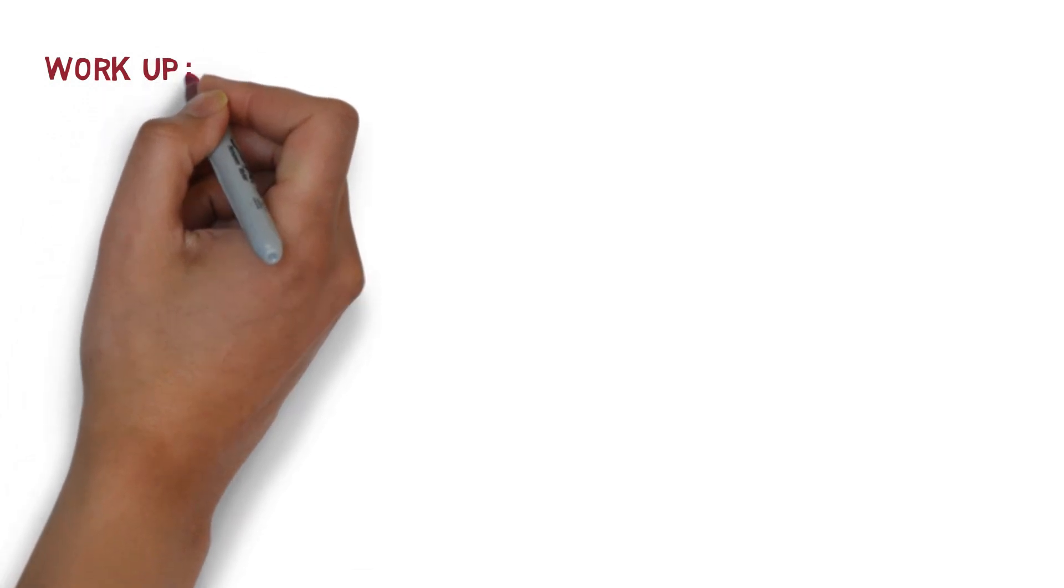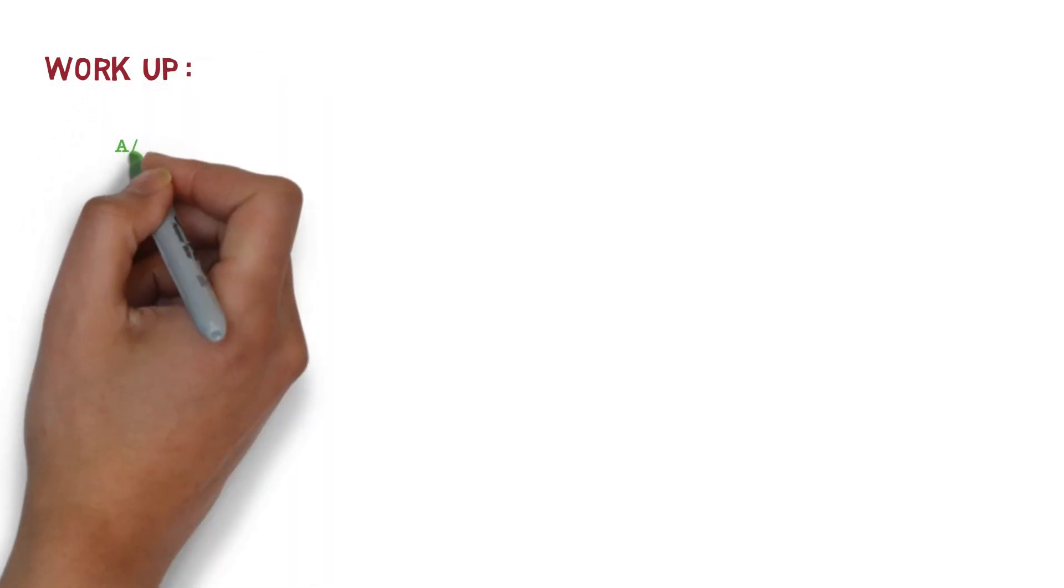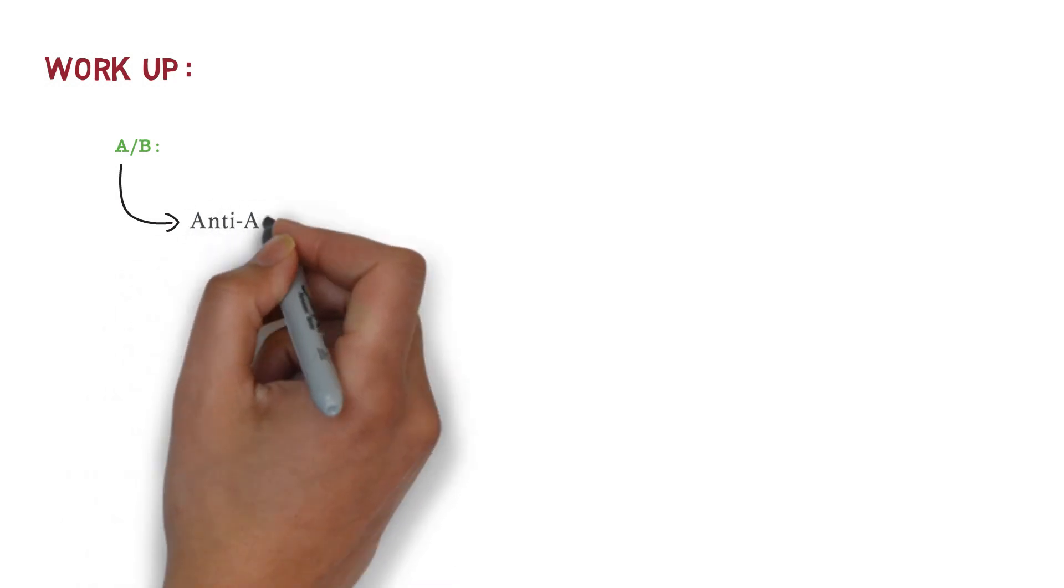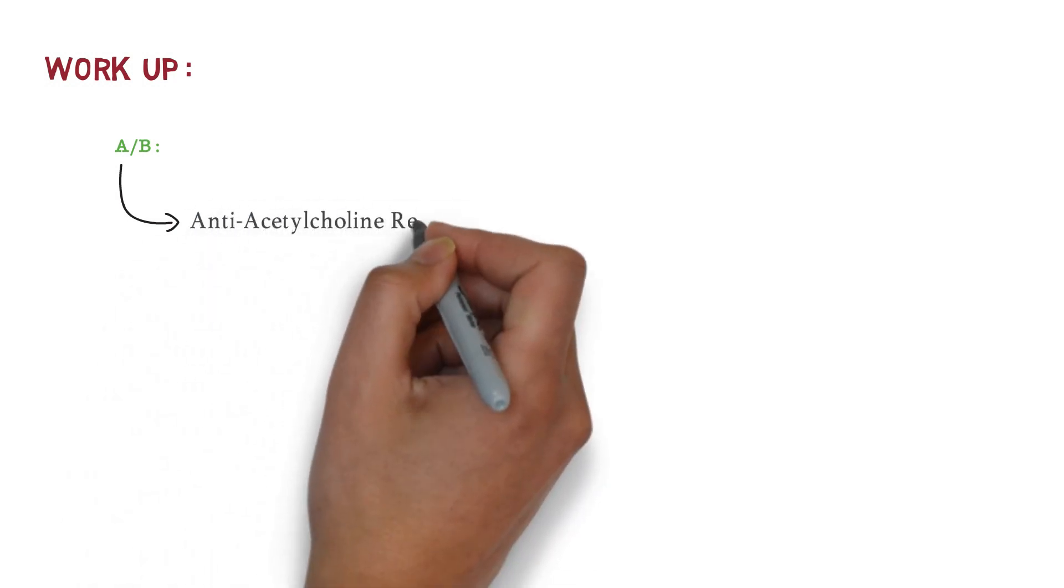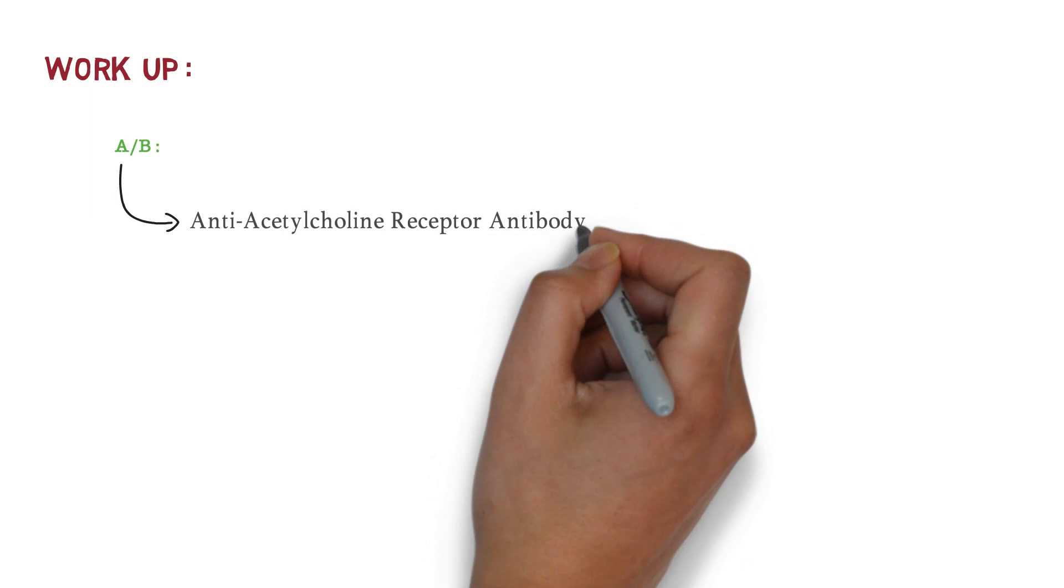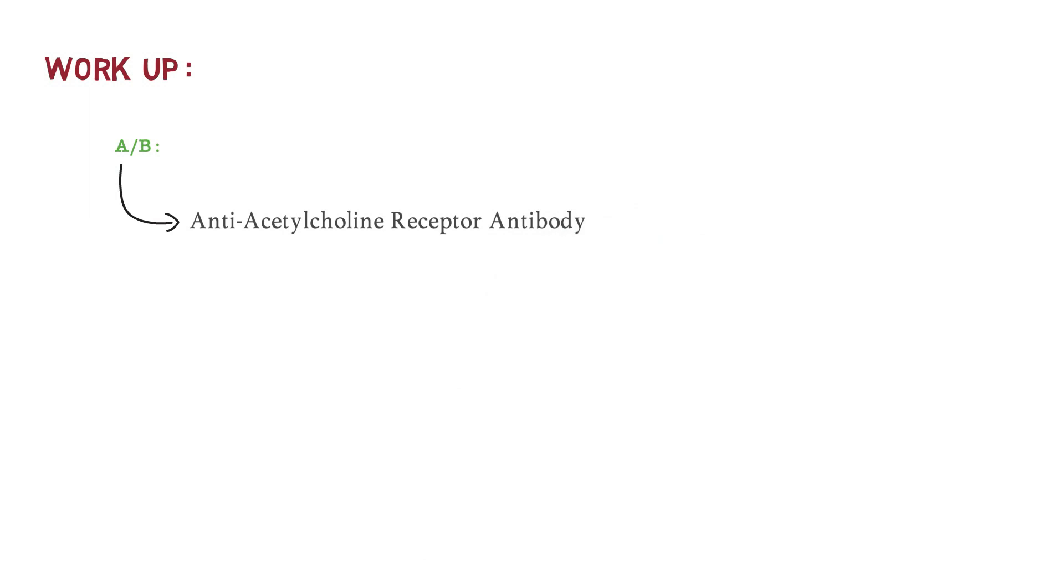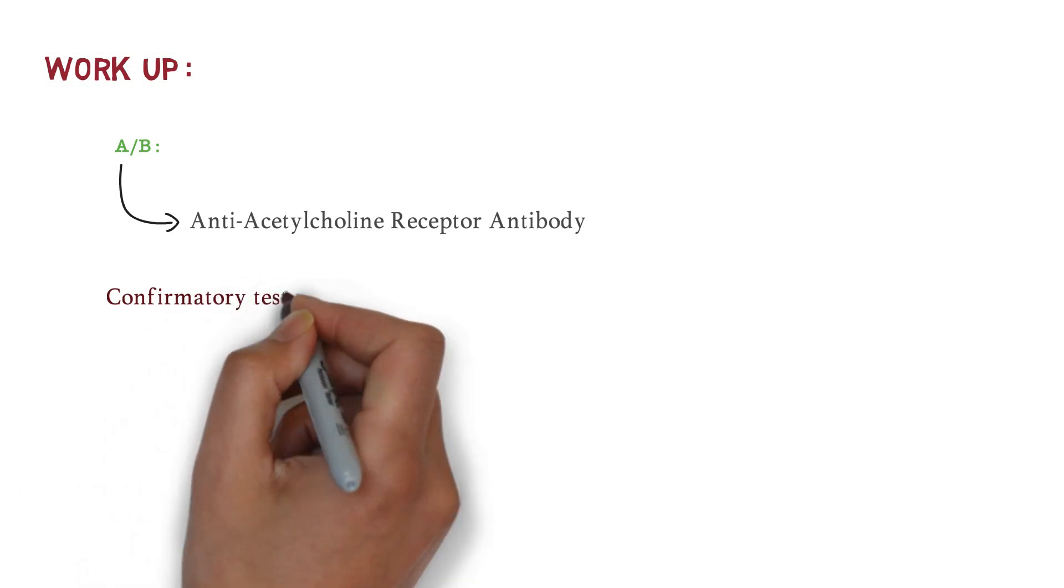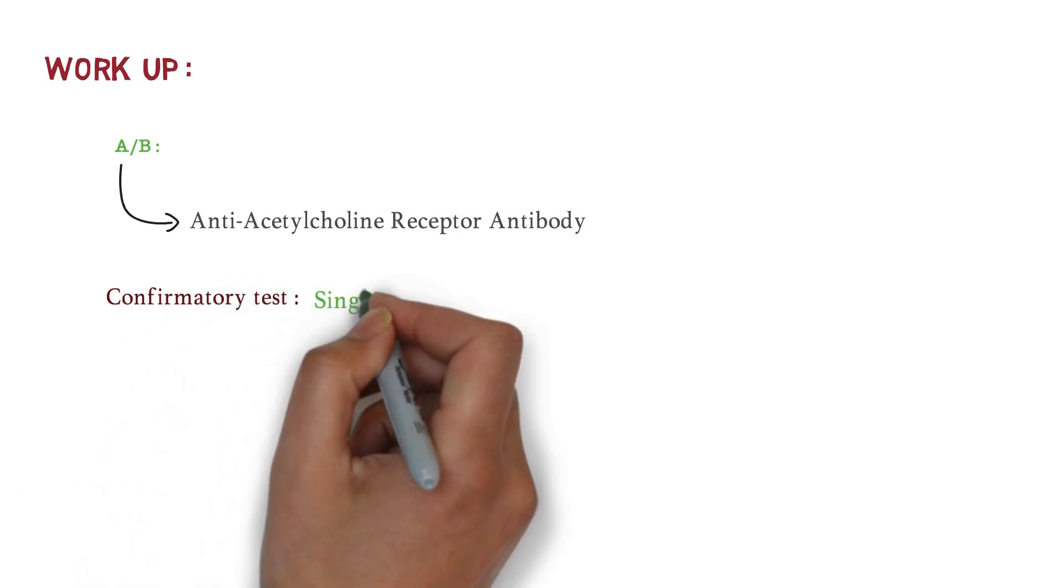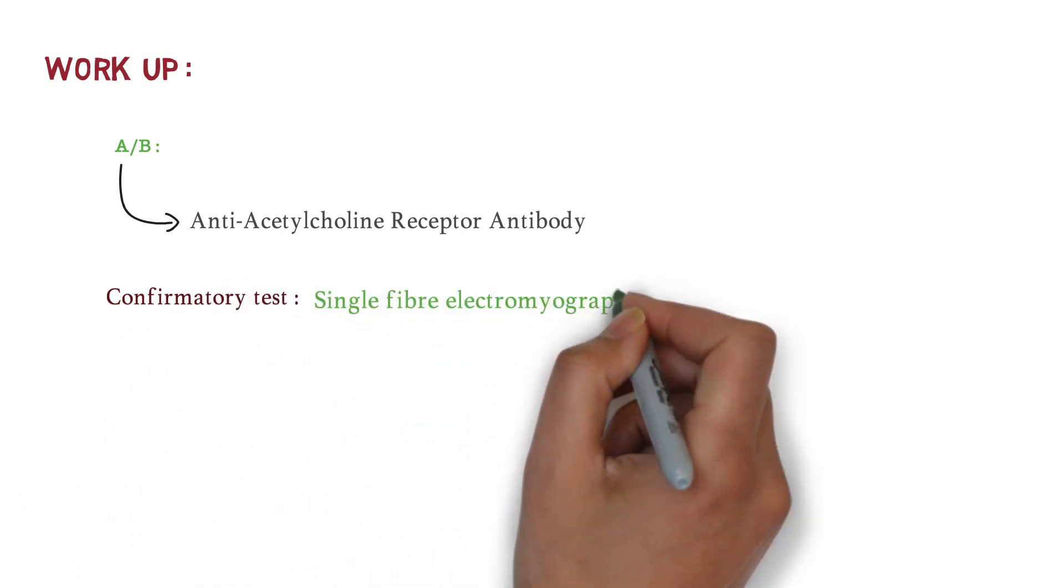Let's talk about the workup. I already told you anti-acetylcholine receptor blocking antibody is found in this disease. But the limitation is negative antibody report doesn't rule out this disease and doesn't correlate with severity of this disease. The confirmatory test is single fiber electromyography.